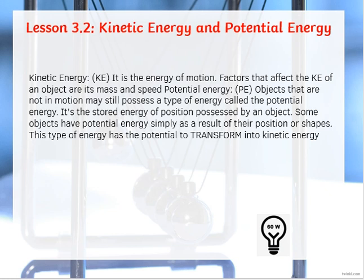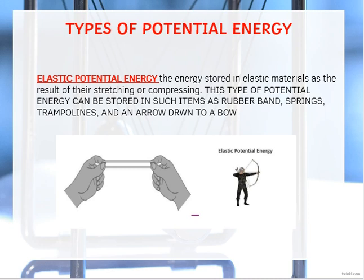As for potential energy, it is the energy that is stored in an object at a specific height. So it's energy stored in an object — we call this potential energy. These types of energy can be transformed, so kinetic energy can transform into potential energy. We are also going to take a deeper look at the types of potential energy, starting with the first type: elastic potential energy.